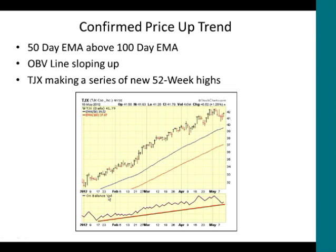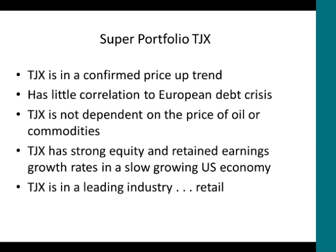We also like to look at stocks that are making new 52-week highs, and we can see that TJX has been making a series of new 52-week highs — those are the best stocks out there. TJX is one of the super portfolio stocks: it's in a confirmed price uptrend, has little correlation to the European debt crisis, is not dependent on the price of oil or commodities, has strong equity and retained earnings growth rates despite the slow-growing U.S. economy, and is in a leading industry — retail.